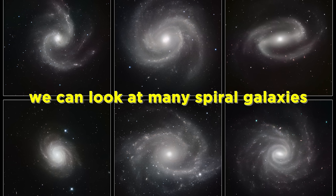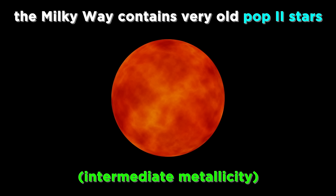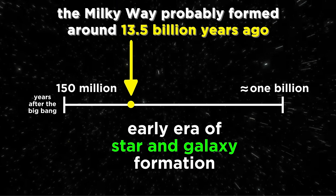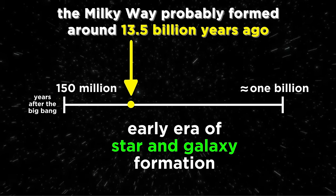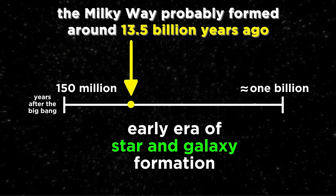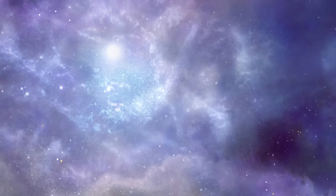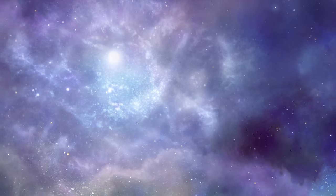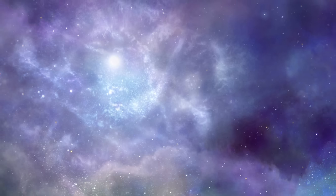This is all typical among spiral galaxies, as we can observe by looking at other galaxies in our vicinity. The oldest stars we can see in the Milky Way are very old population two stars, so we believe the formation of the Milky Way dates back to that early era of galaxy formation, less than one billion years after the Big Bang, whereby a dense region of gas collected to form a system of gravitationally bound stars.